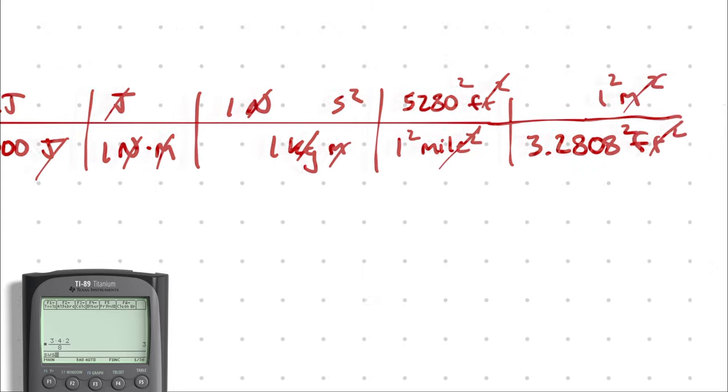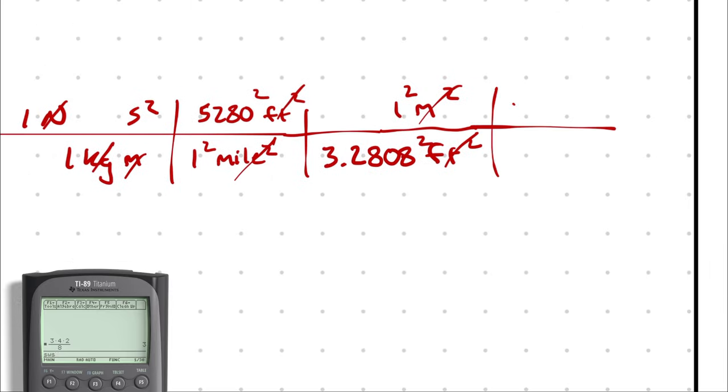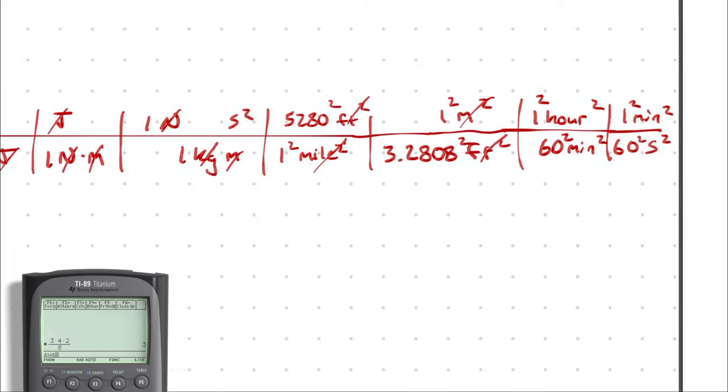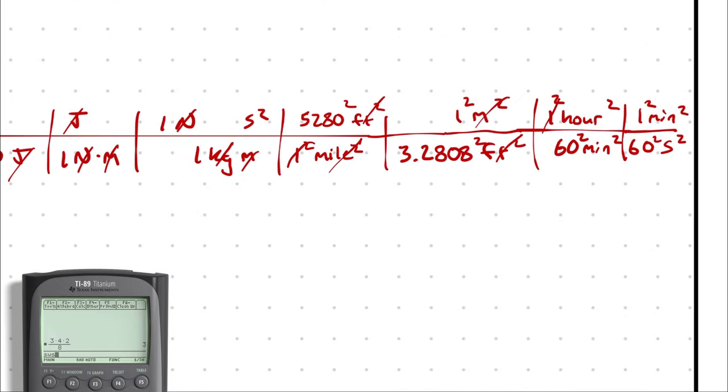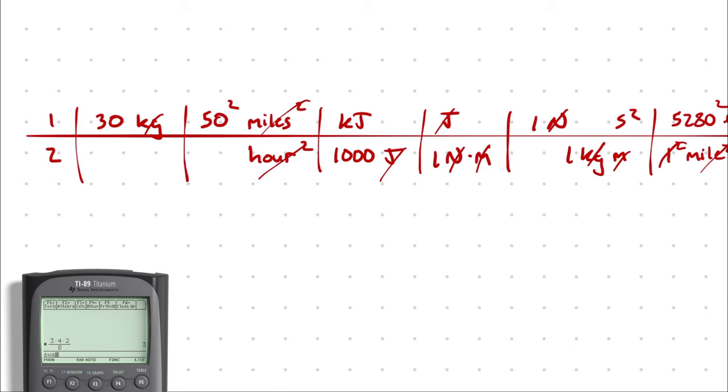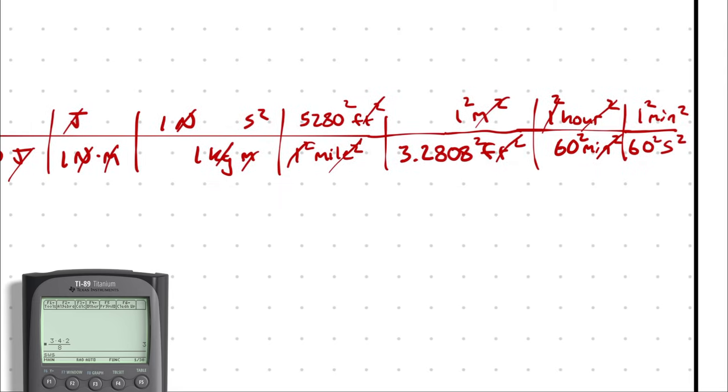Now, seconds squared and hours squared. Well, I know one hour is equivalent to 60 minutes. And I know one minute is equivalent to 60 seconds. And again, if I square everything, I'm still multiplying by one. One minute divided by 60 seconds quantity squared. One squared is one. It's nice and boring. Hour squared cancels hour squared. Minute squared cancels minute squared. Second squared cancels second squared.